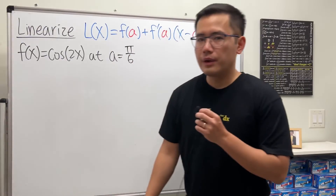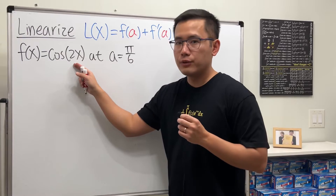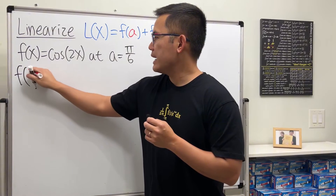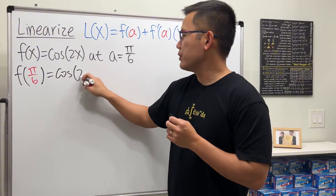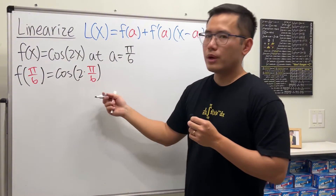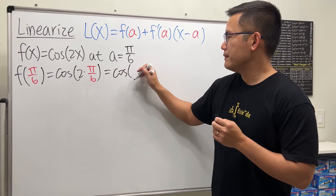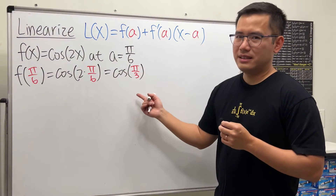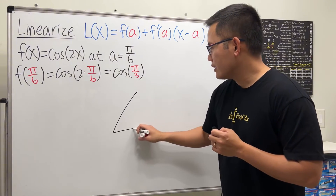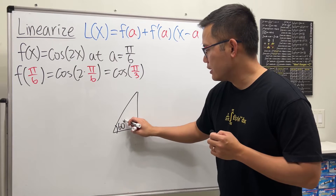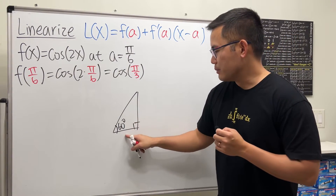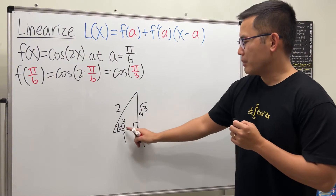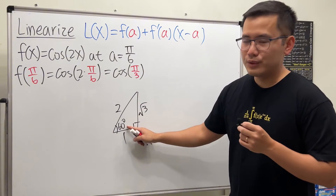Now we're going to linearize cosine of 2x at a equals pi over 6. Using the formula, start by computing f of pi over 6: that's cosine of 2 times pi over 6, which is cosine of pi over 3. Pi over 3 is 60 degrees. Referring to the special 30-60-90 right triangle: the shorter side is 1, the longer side is square root of 3, and the hypotenuse is 2. So cosine of pi over 3 is adjacent over hypotenuse, which is one half.